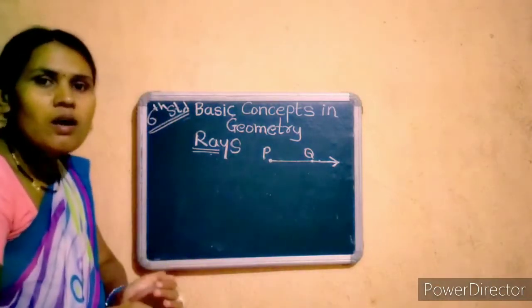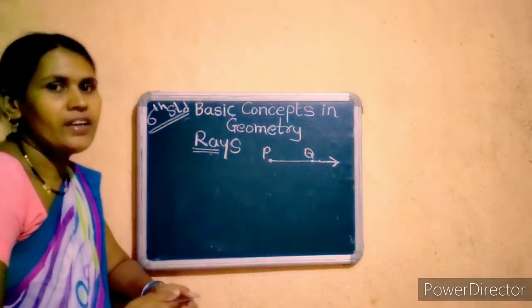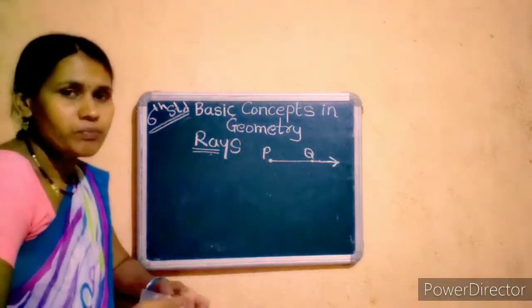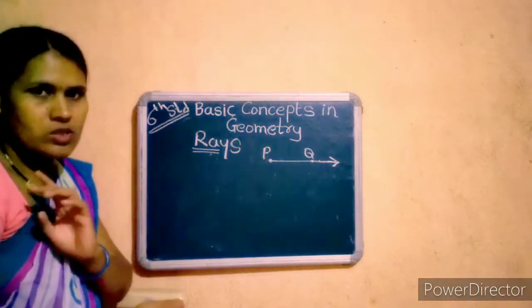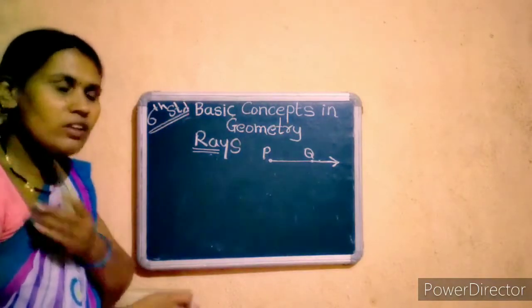Ray is a part of line. And ray starts from one point and forward in one direction continuously.